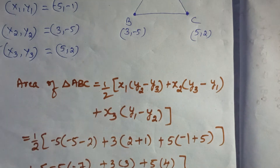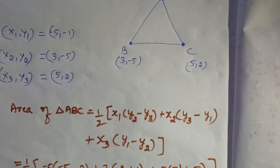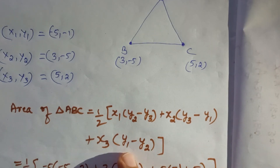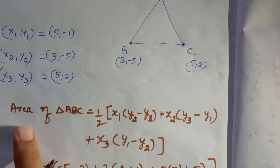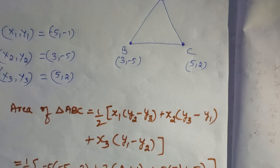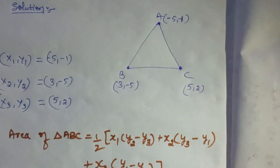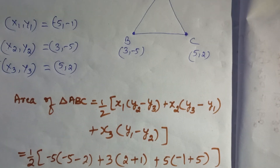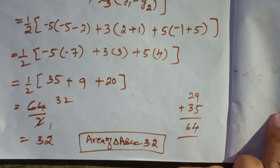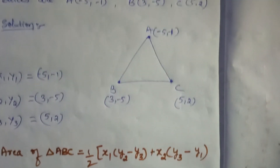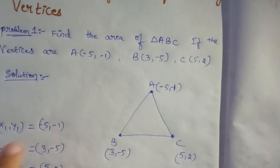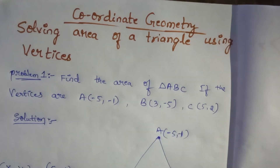Remember the formula: area of triangle ABC = 1/2 × |x1(y2 − y3) + x2(y3 − y1) + x3(y1 − y2)|. The answer for this question is: area of triangle ABC = 32. Here is a practice question — if you have any doubts write in the comment section. Don't forget to subscribe to my channel and share with your friends.